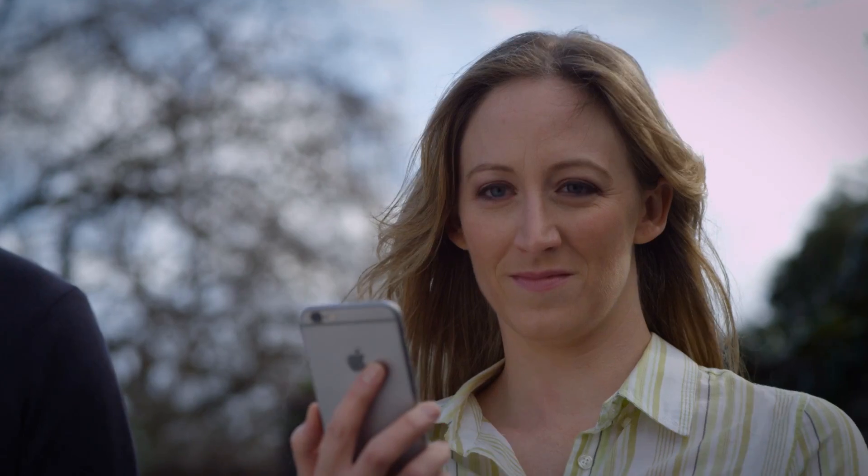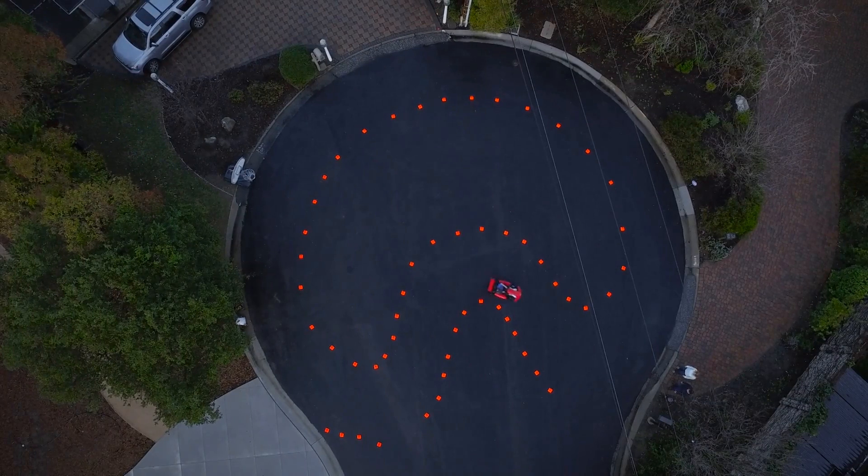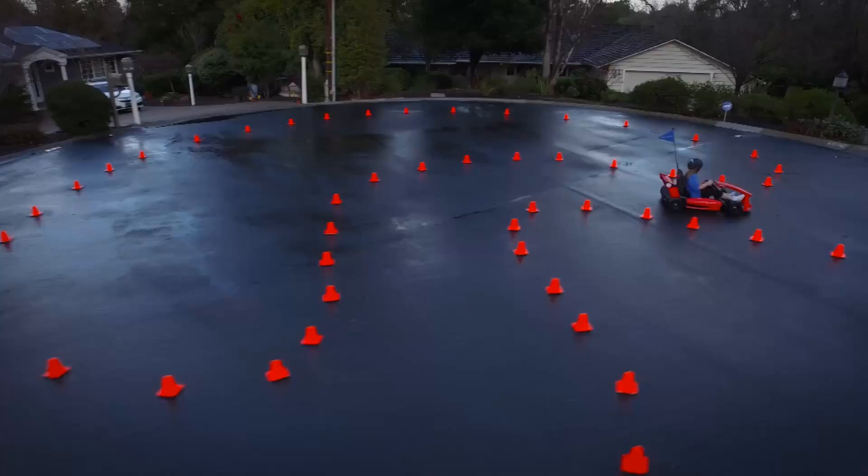The app features an emergency stop button and notifies parents when the anti-collision sensor has been activated. Parents can also customize the Aero with various add-ons, including downloaded engine sounds.